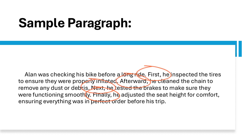Time markers — words like first, afterward, next, and finally — signal the progression of time and guide the reader through each step Alan takes, keeping the sequence clear and logical. By the end of the sequence, everything is in order for Alan's trip, signaling the completion of the process. This time sequence paragraph is effective in showing the chronological steps Alan follows, making it easy for the reader to follow along as each task builds upon the previous one.